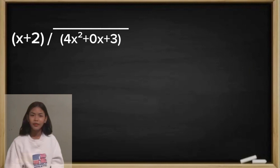Ang una natin gagawin ay ididivide natin ang leading term ng dividend sa leading term ng ating divisor. So that will be 4x squared over x, or 4x squared divided by x. That is equal to 4x.